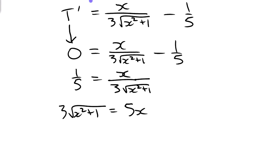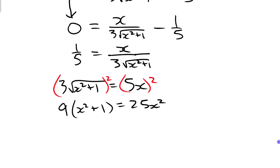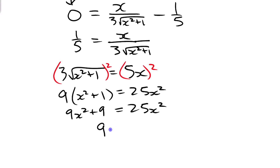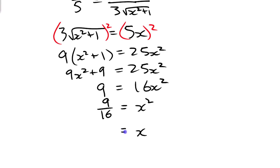To get rid of the square root, we square both sides: 25x² = 9(x² + 1). Distributing the nine and moving the x terms together on the same side gives 16x² = 9. Dividing both sides by 16: x² = 9/16. Taking the square root of both sides: x = ±3/4.